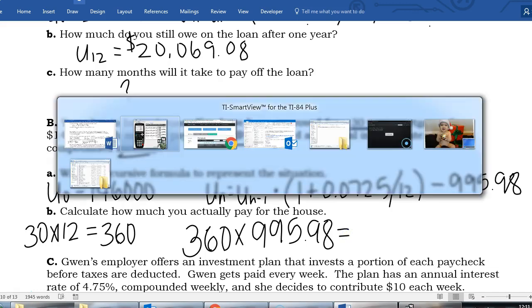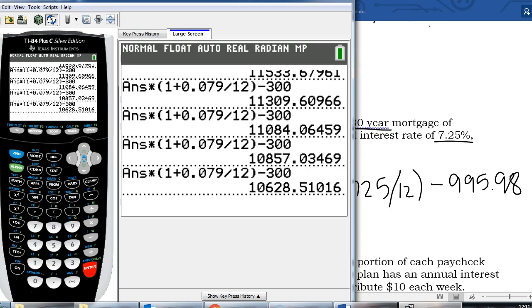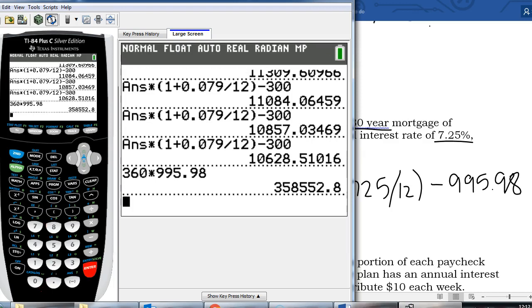So I'm going to jump over to my calculator. 360 payments times $995.98.